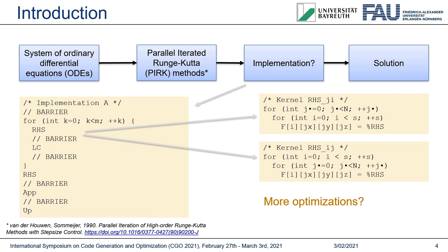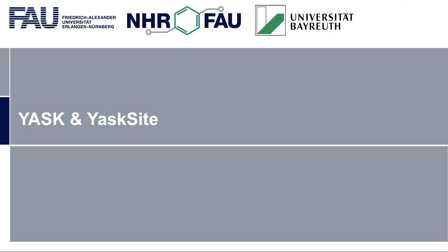Additional optimizations might include transformations such as loop tiling or vector forwarding, trying different compiler options, different parameter values such as block size, or tuning for specific hardware. Done by hand, this is of course cumbersome. Luckily, auto-tuning tools such as YASKSite can either carry out that task automatically or at least guide us in the process.